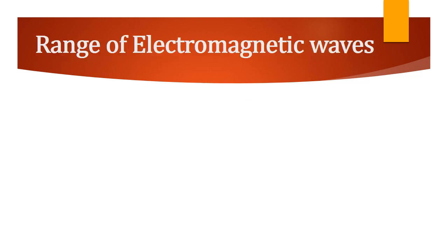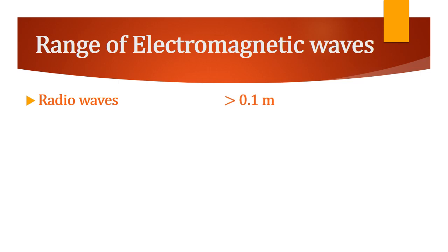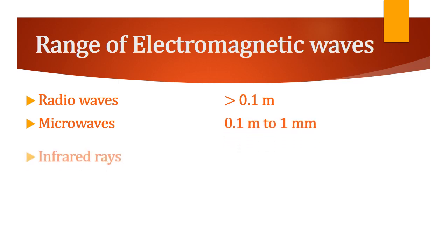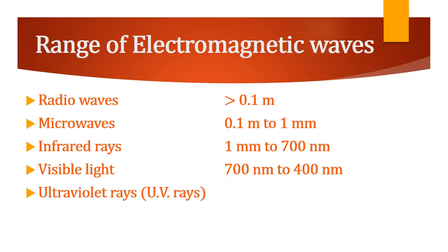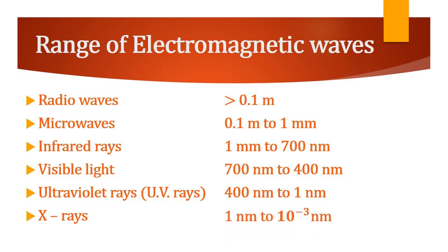Let us now discuss about the range of electromagnetic waves. Radio waves: greater than 0.1 meter. Microwaves: 0.1 meter to 1 millimeter. Infrared rays: 1 mm to 700 nanometer. Visible light: 700 nanometer to 400 nanometer. Ultraviolet rays: 400 nanometer to 1 nanometer. X-rays: 1 nanometer to 10 to the power minus 3 nanometer. Gamma rays: less than 10 raised to minus 3 nanometer.